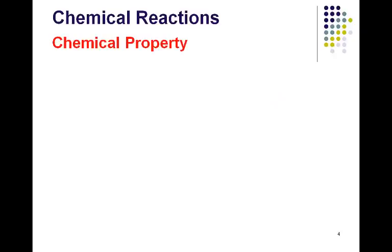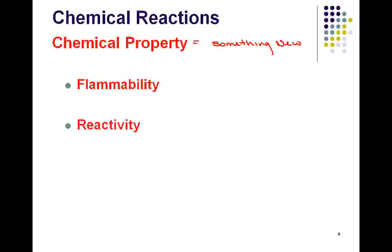Now a chemical property on the other hand can only be observed when the substance is changing into something different. Here we have to have the creation of something new. Our two chemical properties are flammability, a material's ability to burn in the presence of oxygen, how flammable it is, and reactivity, which is how easily a substance combines chemically with other substances, how reactive it is.